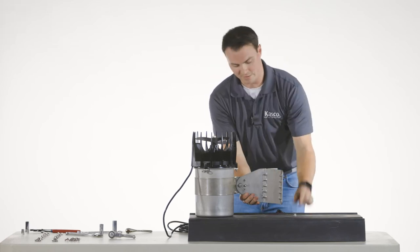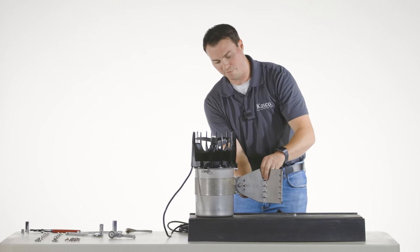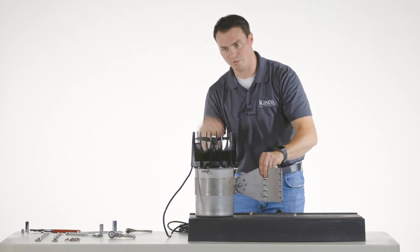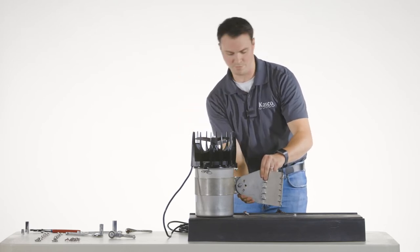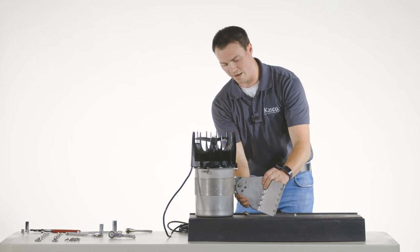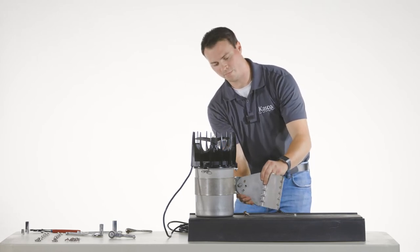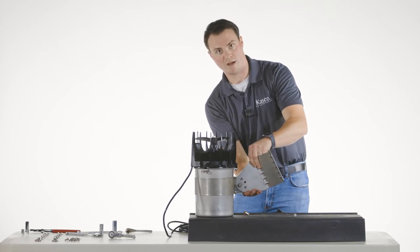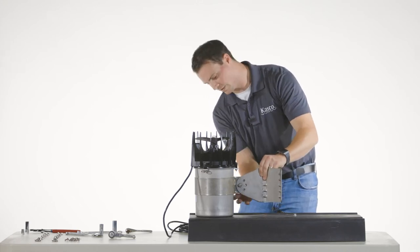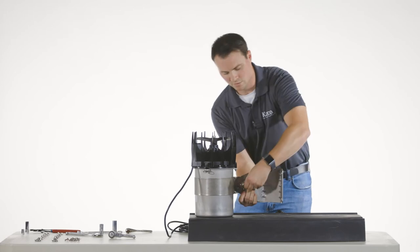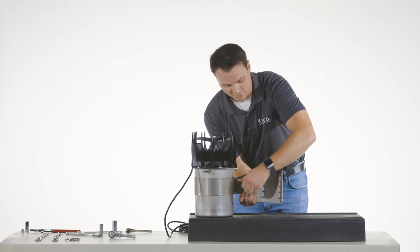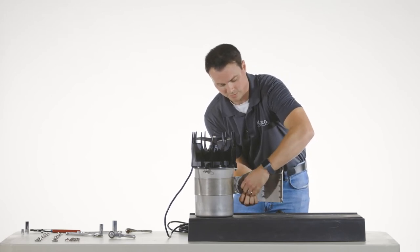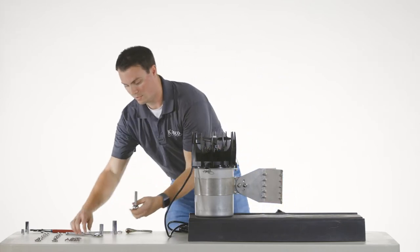If they want it facing more of a negative or like a declining direction so they want to kind of force the flow down, they'll want to make sure that that bracket will be down a little bit or if they want it facing up towards the surface, up towards the prop. So in this case we're just going to go straight horizontal, bolt goes in, nut on the other side, and we tighten down.